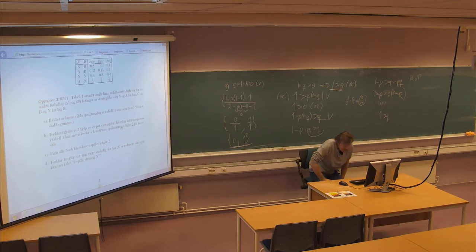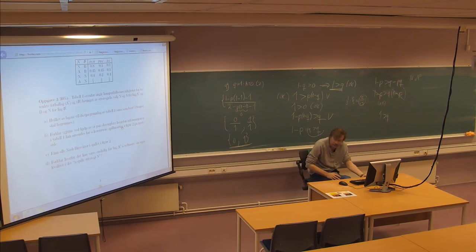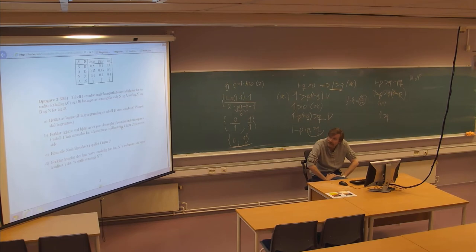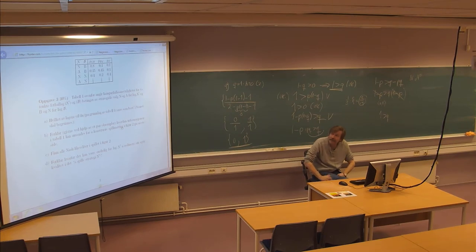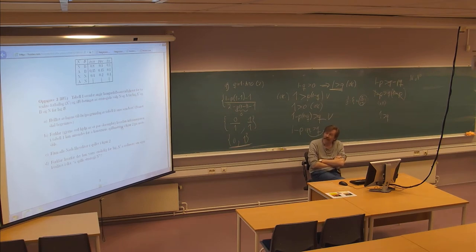The first question: which of the teams would you, based on the information in table 1, assume to be the best? Looking at these probabilities, the N team has a higher probability of beating the B team than the opposite in the first line. There are equal probabilities in the second line and the fourth line. In two of these strategic situations, the N team is best; in the others, they are equally good.